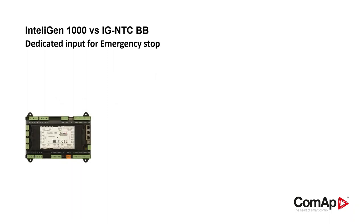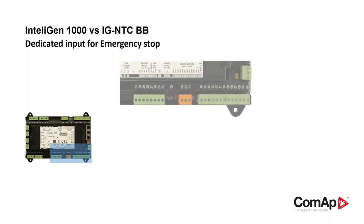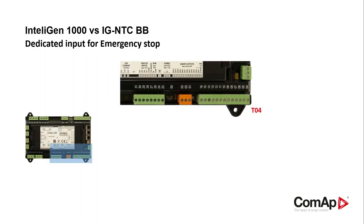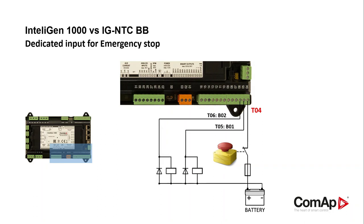In the Intelligent 1000 controller, the emergency stop must be wired to a specific terminal, that is the terminal T04, which is internally connected with two specific outputs: binary output 1 at terminal 5 and binary output 2 at terminal 6. These outputs can be freely assigned but they are mainly used for the signal that controls the starter and for the signal that controls the fuel solenoid.